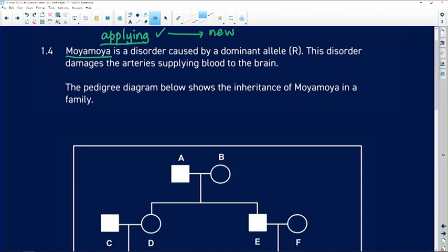Because we don't know anything about Moyamoya but we know it's a genetic disorder. You've learned about genetic disorders. This one is caused by a dominant allele R.